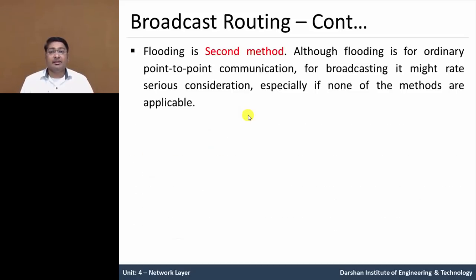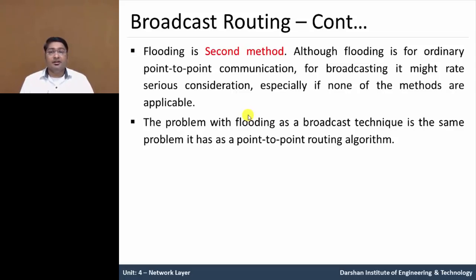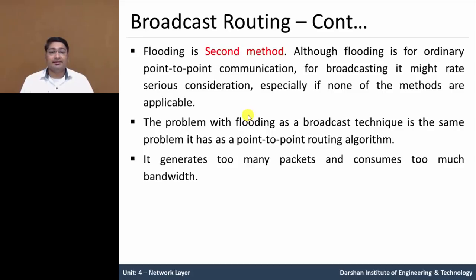Flooding is the second method. Flooding is used for ordinary point-to-point communication. In broadcasting, it might be a serious consideration — especially if none of the other methods are applicable, we use flooding. The packet is sent to each node via point-to-point communication. The problem with flooding as a broadcast technique is that it uses the point-to-point routing algorithm, generating too many packets and consuming too much bandwidth.